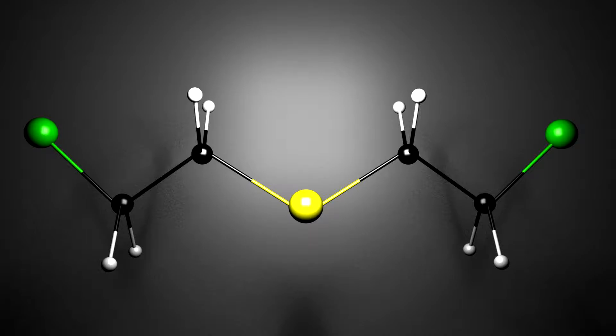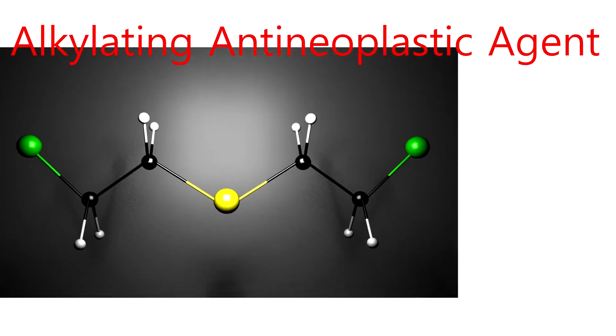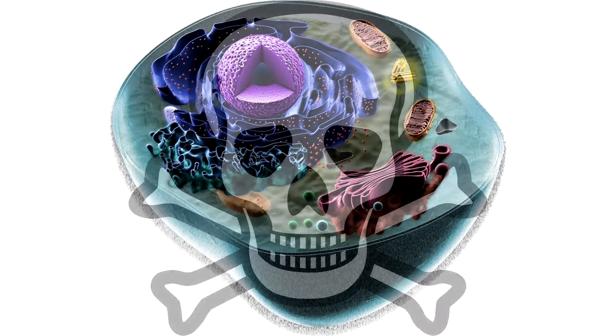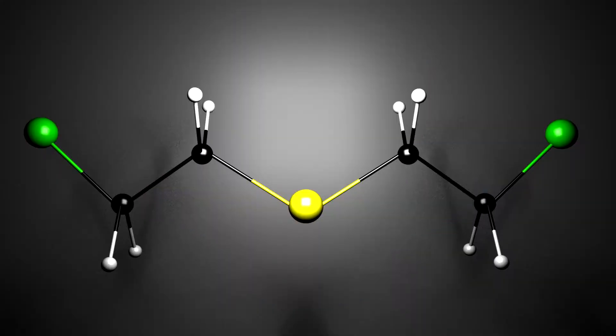Sulfur mustard is an alkylating anti-neoplastic agent. These substances are used in cancer treatment by adding alkyl groups to DNA molecules resulting in the cell being damaged or destroyed. Now we should introduce the two main molecules sulfur mustard bonds with in order to act as a deadly chemical weapon, DNA and RNA.